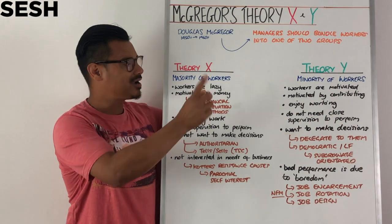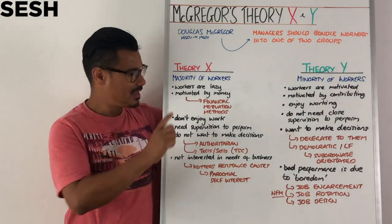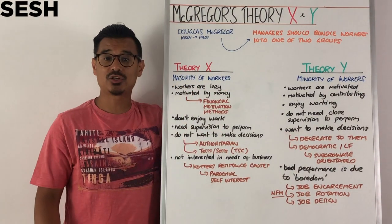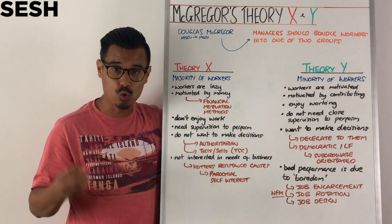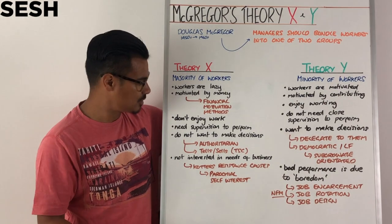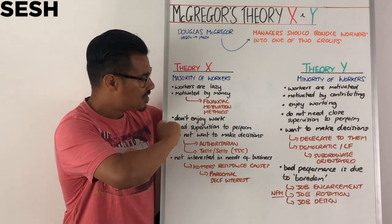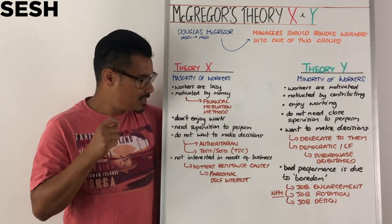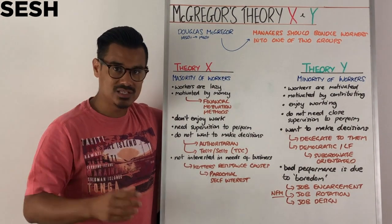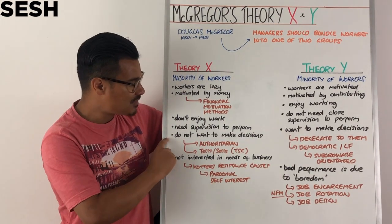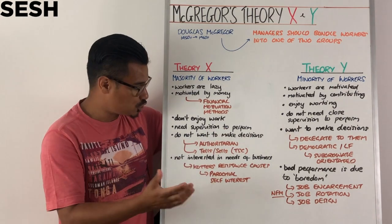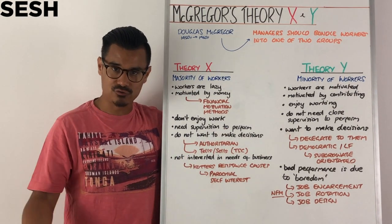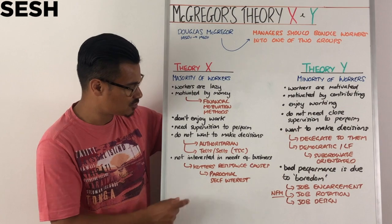Theory X is the idea that workers are lazy. They are motivated by money, so you might want to put financial motivation methods in place in order to motivate them, because they are lazy. They don't enjoy work — they need supervision to be performing to the level expected of them. They do not want to make decisions, so you shouldn't delegate to them. You should look to use an autocratic, an authoritarian management style.